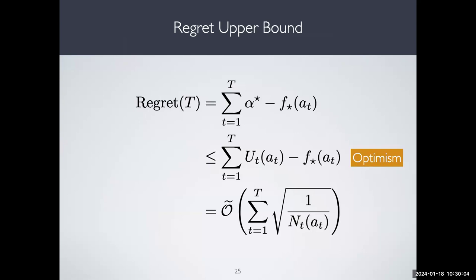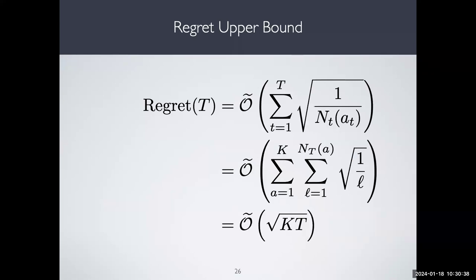How do we use optimism to prove the bound? Regret is as defined. Because of optimism, we substitute the alpha-star term by u-t of a-t. Because of the vanishing error, u-t minus F-star is of order one over root n-t. Summing these quantities, you get a sum of square roots of one over n-t, which you can write as a sum over each arm of one over l from l equals one to the number of times you played that arm — and this is at most square root K·T.